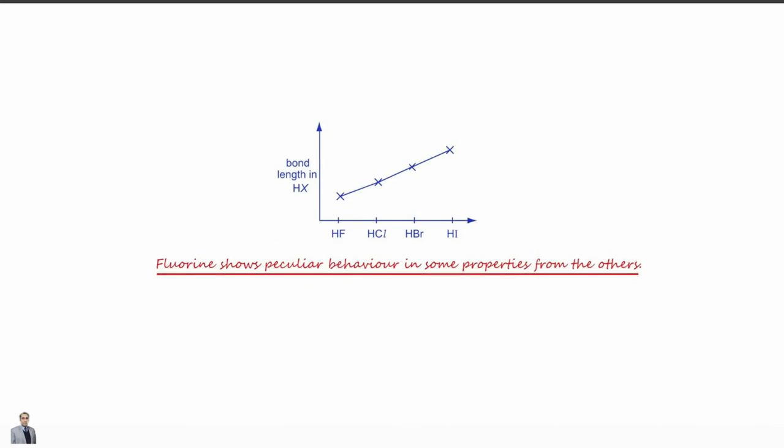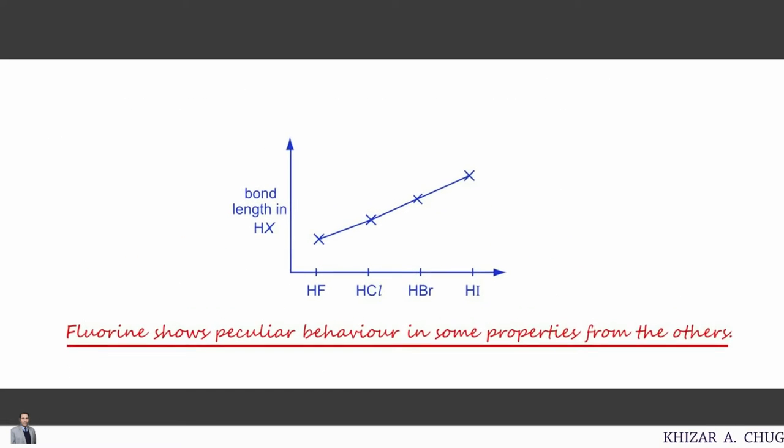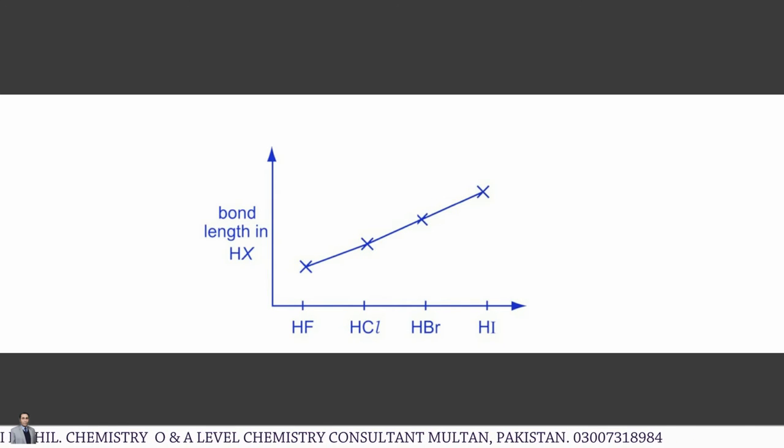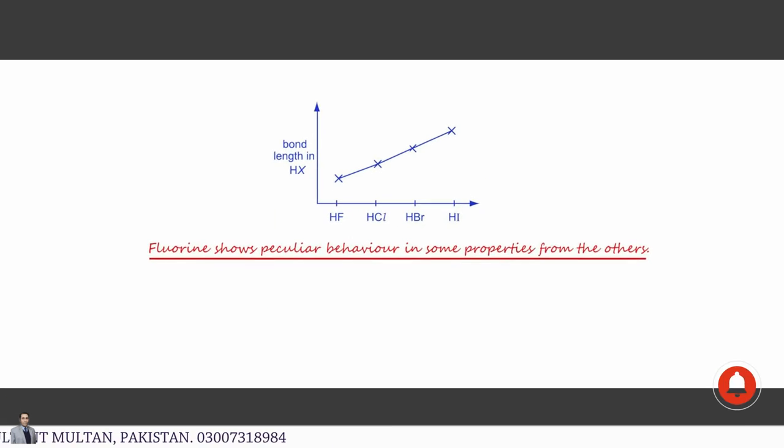That is the bond length in HX: HF, HCl, HBr, and HI. As we move from top to the bottom, we see that HF, then HCl, then HBr, then HI has the bond length. As the size of the halogen atom increases, the bond length in HX molecules also increases.